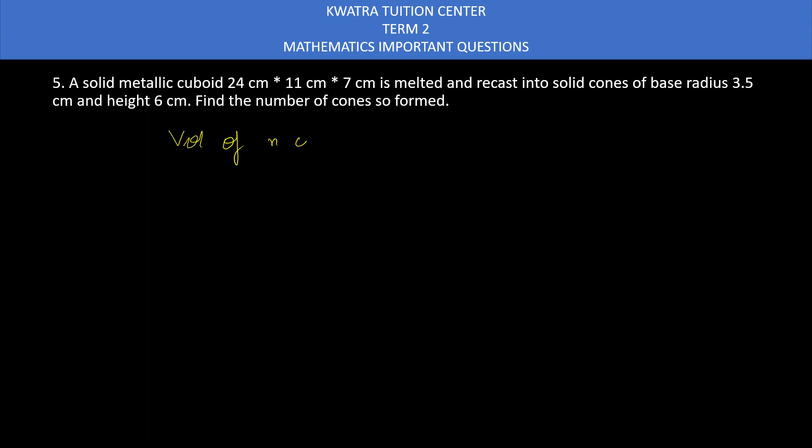You have volume of n cones is equal to volume of cuboid. So n cones means that you have n times volume of 1 cone, which is 1 by 3 pi r square h. Let's put the formula in it, pi r square h. And on the right side, you have volume of cuboid, which is l into b into h.